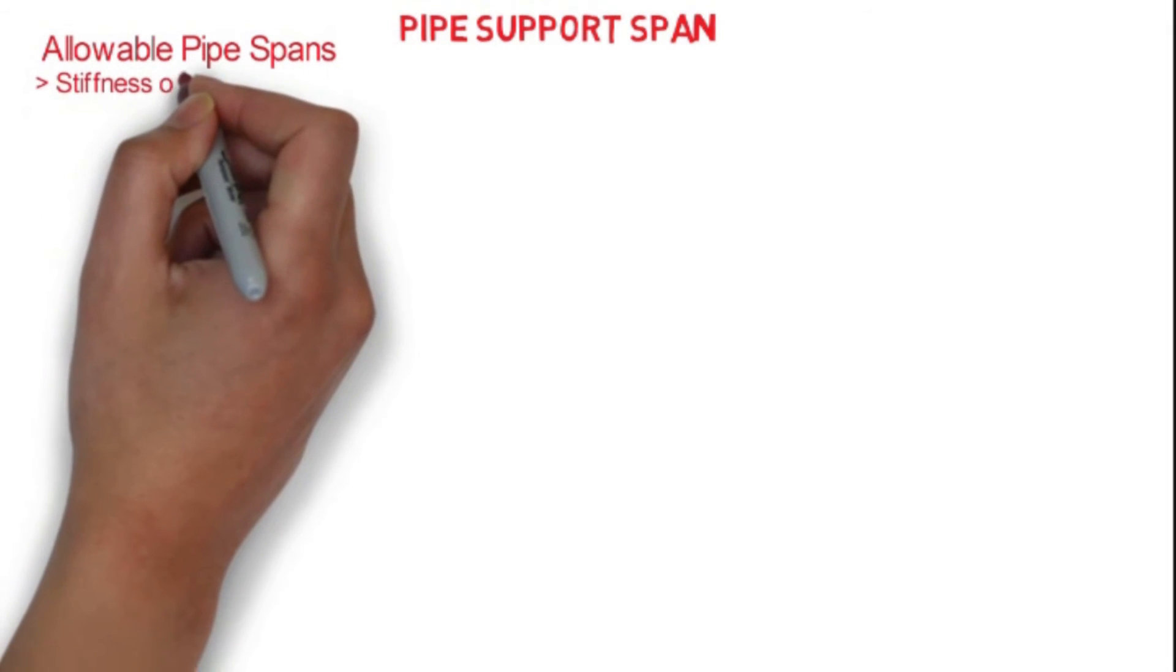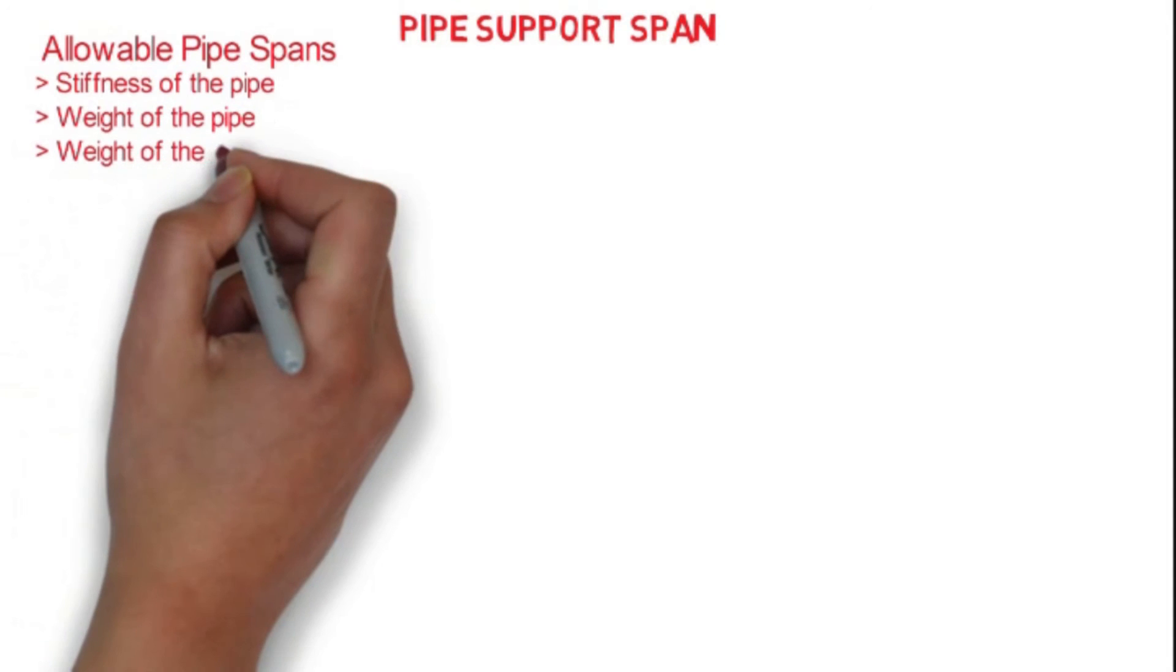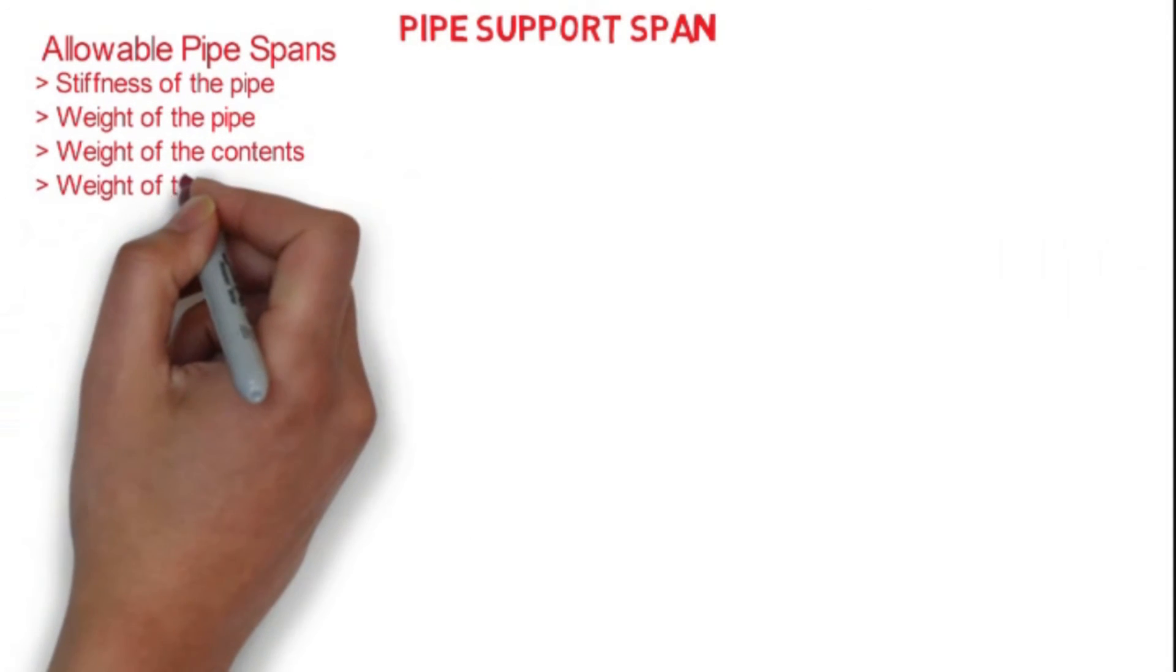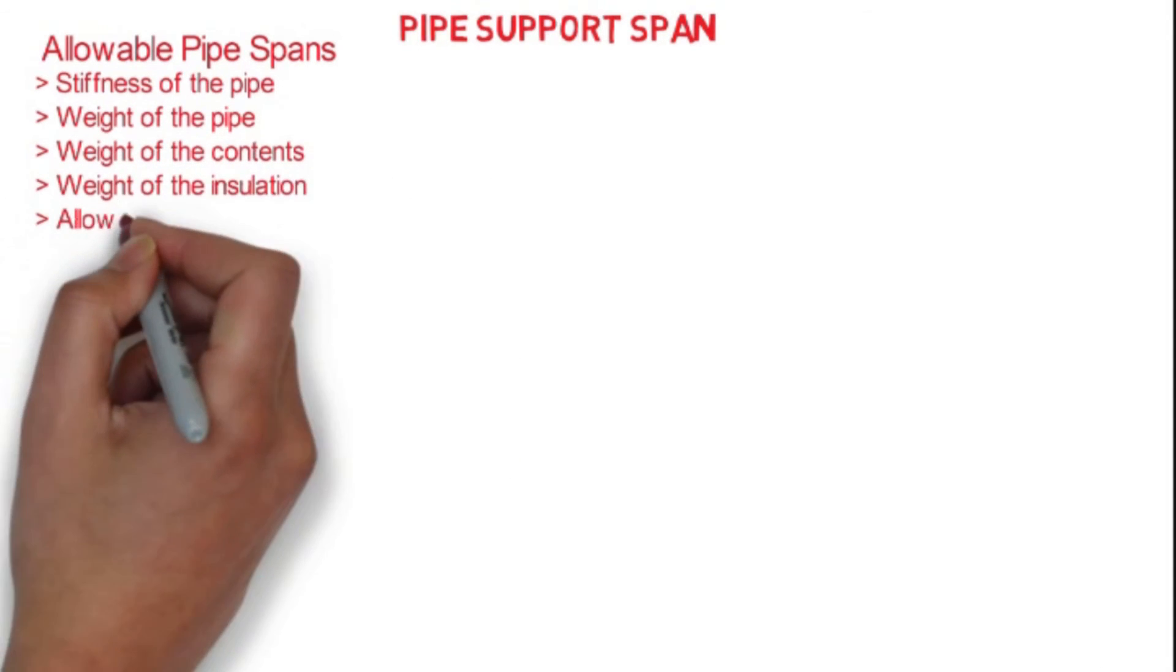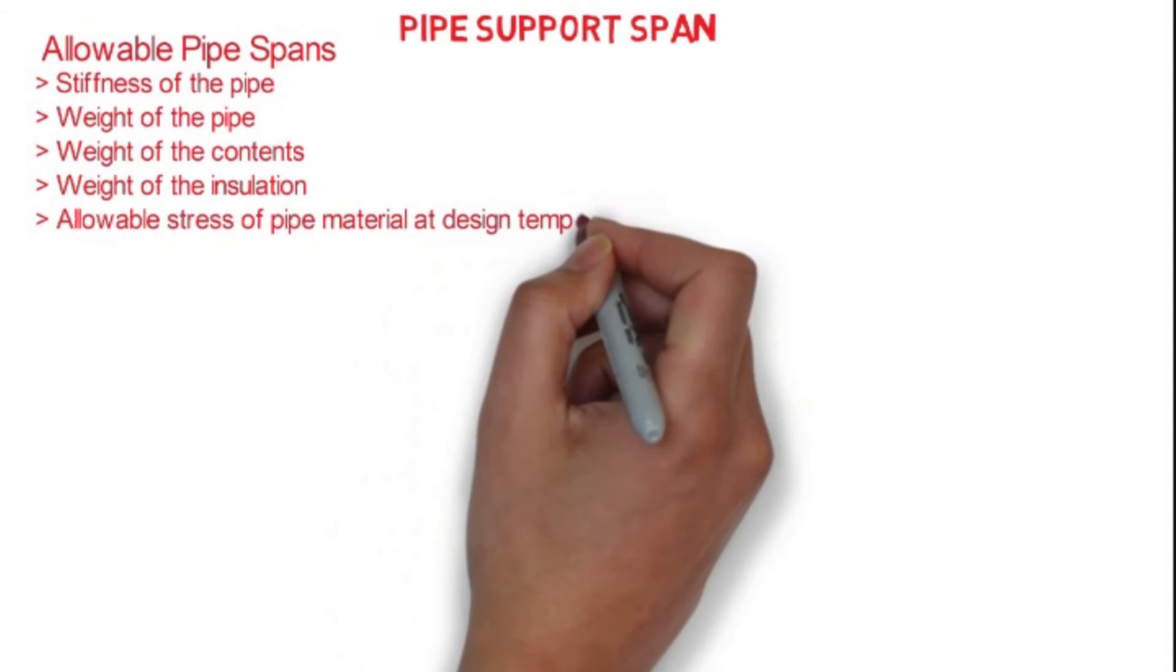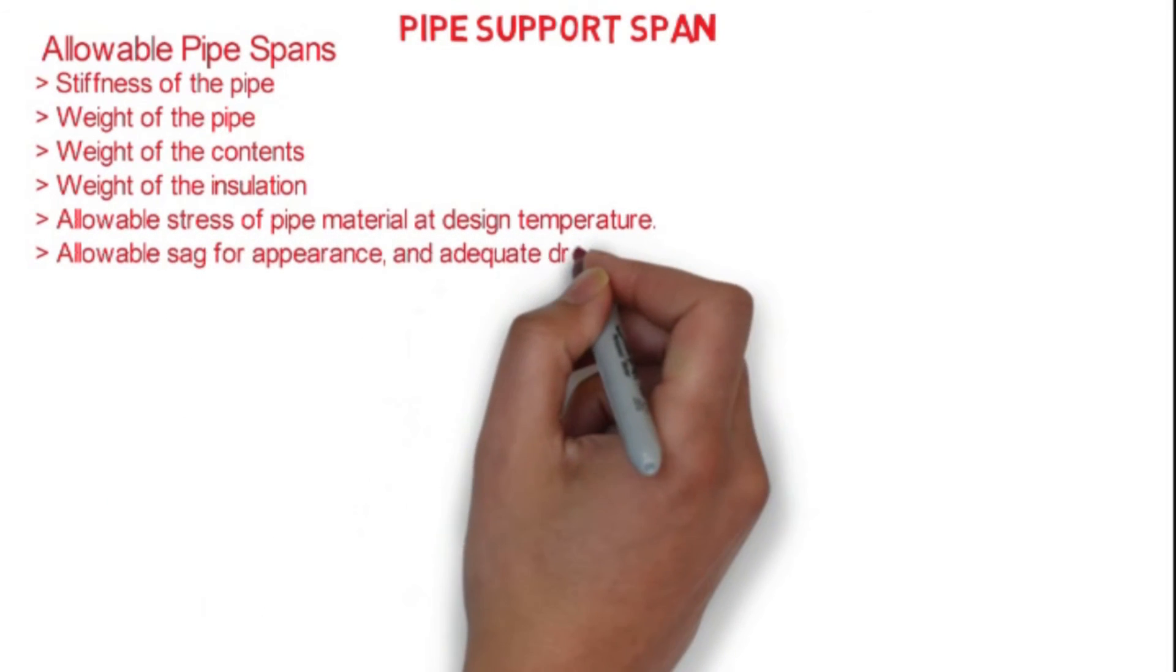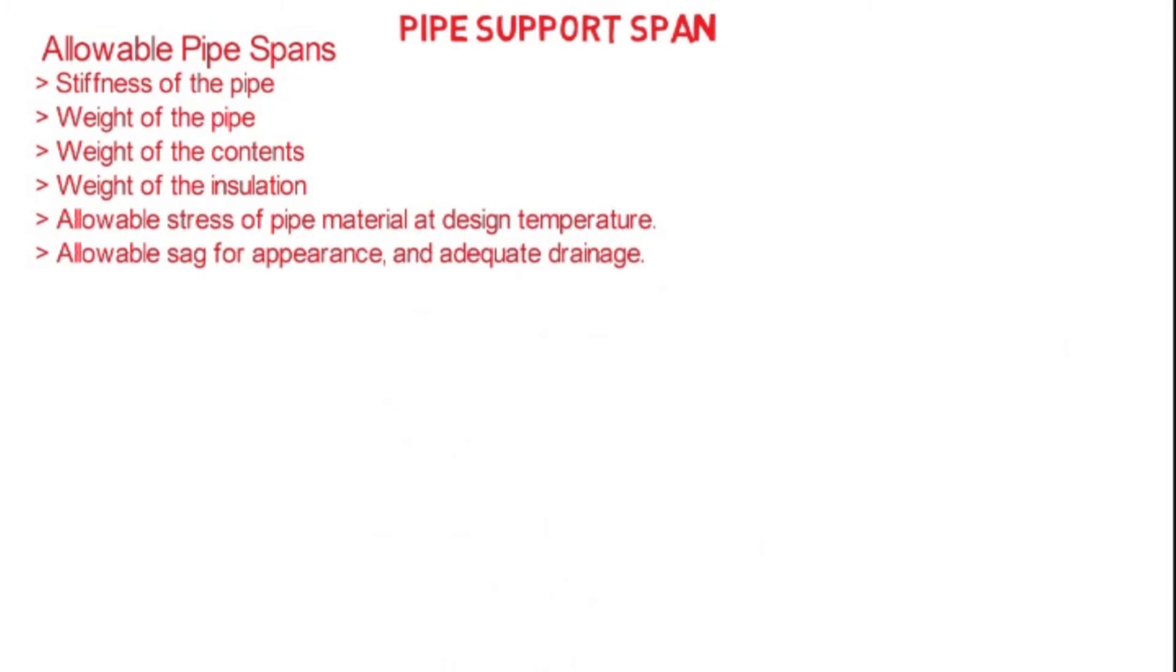Now we will discuss what is allowable pipe span. The allowable pipe span depends upon the stiffness of the pipe, weight of the pipe, weight of the contents it's carrying, weight of the insulation, allowable stress of the pipe material at design temperature, and allowable sag for appearance and adequate drainage.